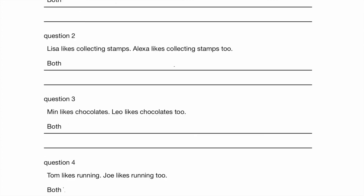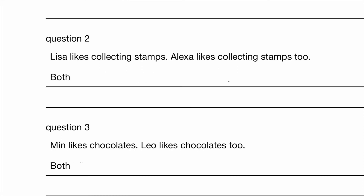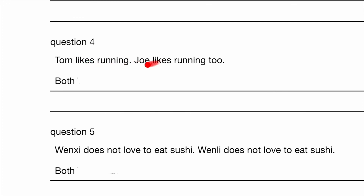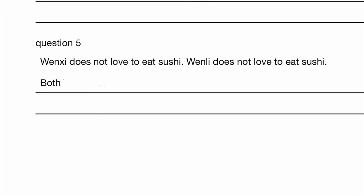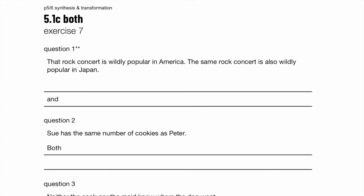Exercise 6: Olivia and Kylie — both Olivia and Kylie go to school by bus. Make sure 'goes' is converted to 'go.' Lisa and Alexa — both Lisa and Alexa like collecting stamps. You don't have to add the word 'to' in your answer. Min and Leo — both Min and Leo like chocolates. Tom is singular so 'likes' with S, Joe is singular 'likes' with S, but when using 'both' to join them it's plural — so 'like' comes without S: both Tom and Joe like running. Wen-C and Wen-Li — 'does' is singular but 'do' is what we should use — both Wen-C and Wen-Li do not like to eat sushi.